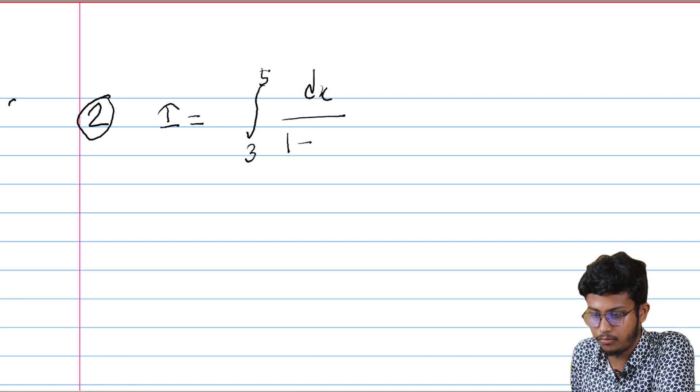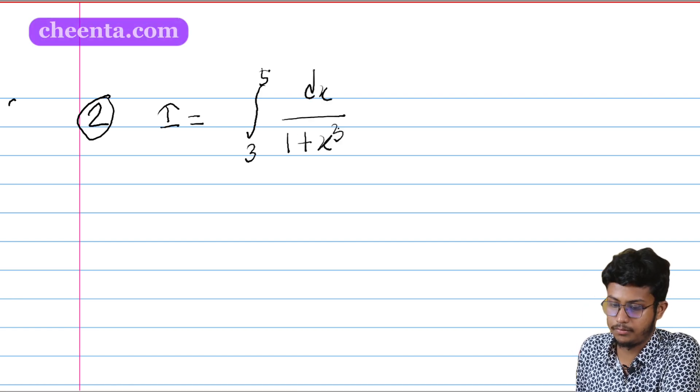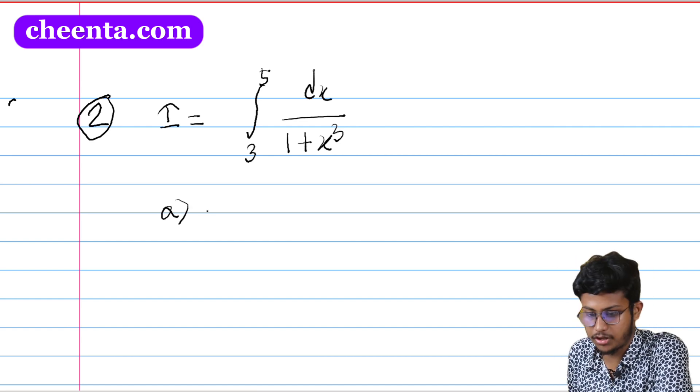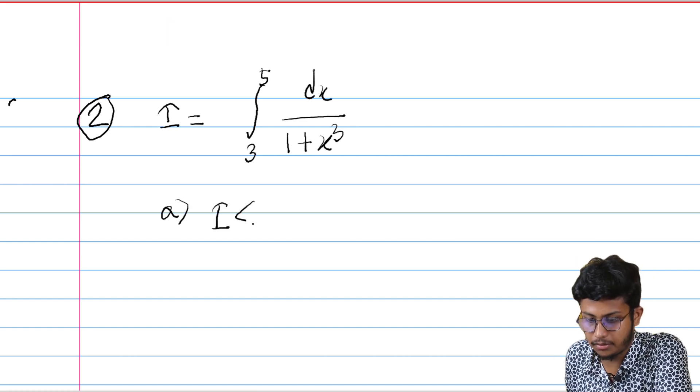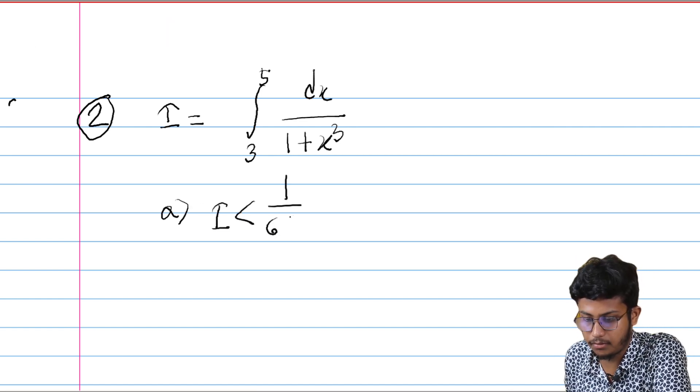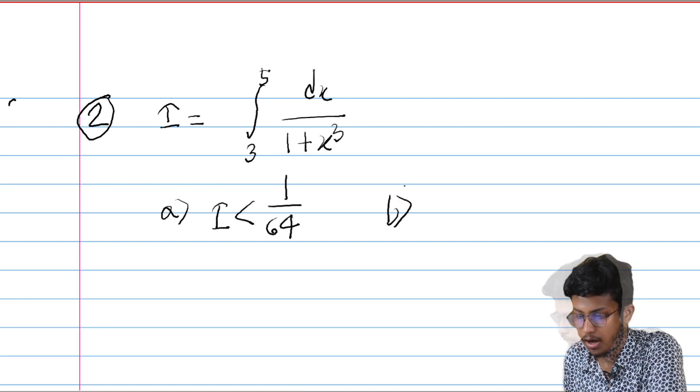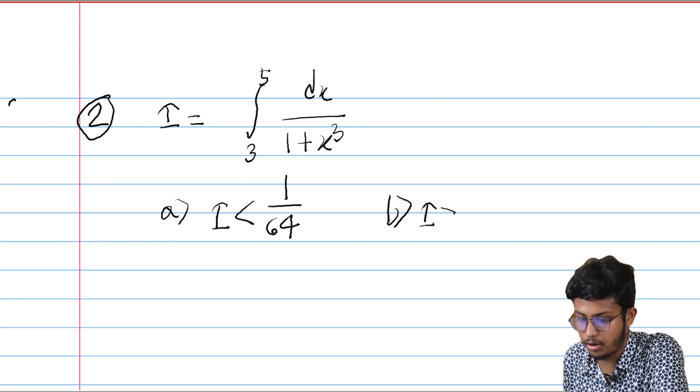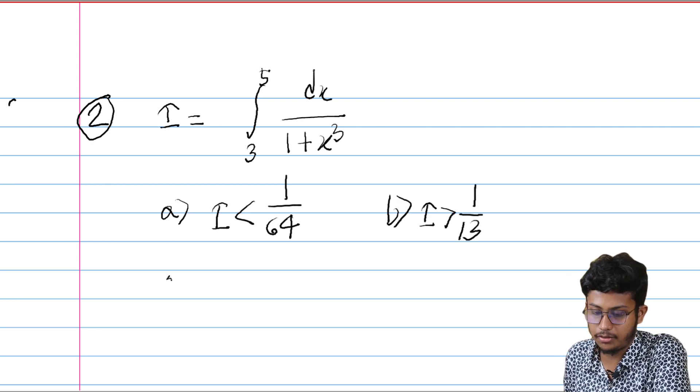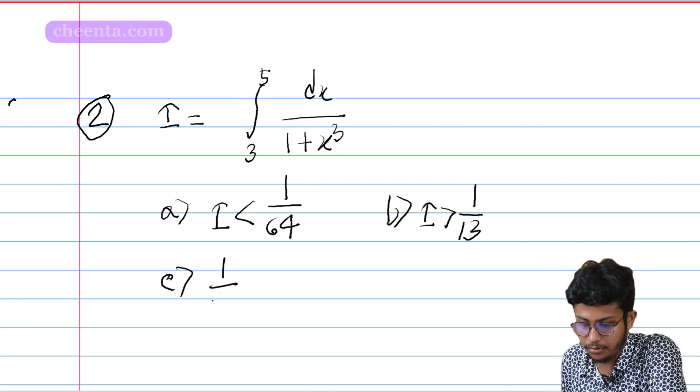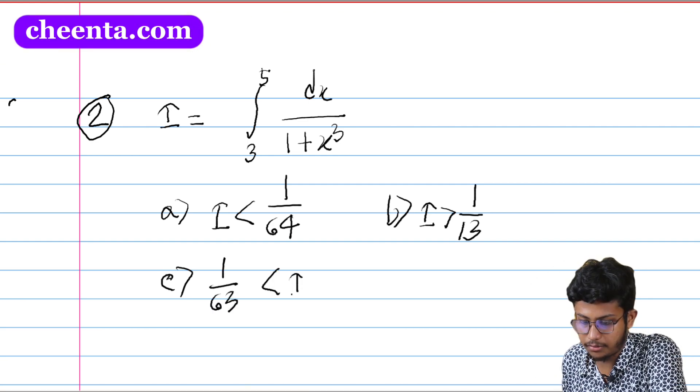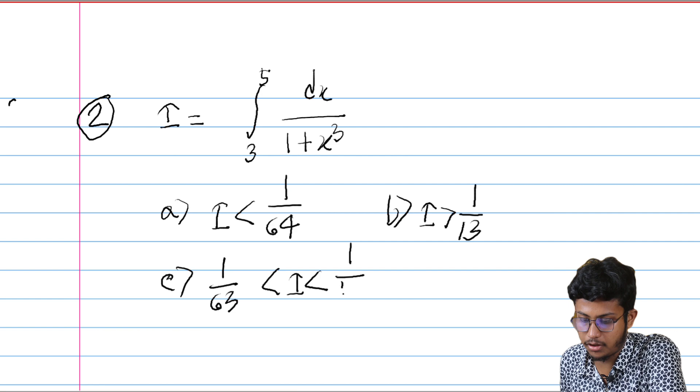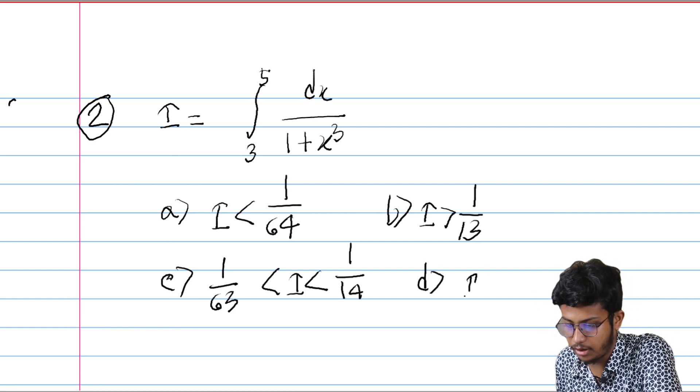So here are our options. Option A is I is less than 1 by 64. Option B says I is greater than 1 by 13. Option C says 1 by 63 less than I less than 1 by 14.